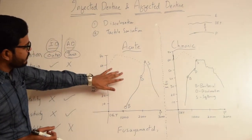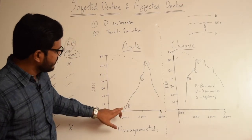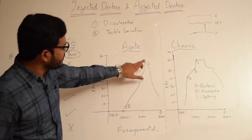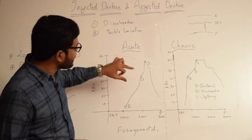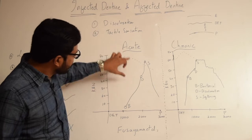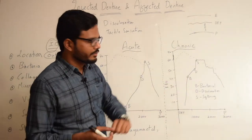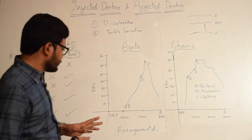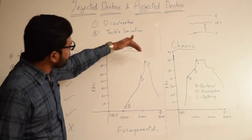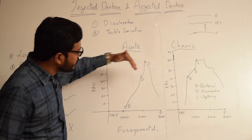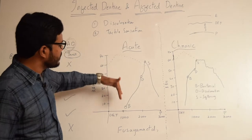If you observe the first graph for acute caries, you have B here, D here, and S here. The distance between B and D is greater in acute caries compared to chronic caries, where the distance is much lesser. Commonly observable in both graphs, the softening front is present at a deeper aspect compared to the discoloration front, which is deeper compared to the bacterial front. So the bacterial front is more towards the enamel side and the softening front is more towards the pulpal side.